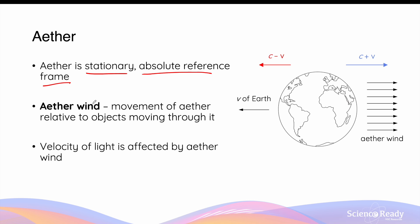That is, the relative velocity of all objects in the universe is measured and observed from the frame of reference of the ether. The movement of Earth through the ether creates what's known as the ether wind. The direction of the ether wind is always opposite to the direction of Earth's velocity. So if Earth is moving towards the left, then the ether wind will be going towards the right.